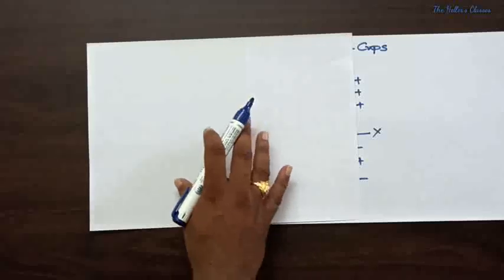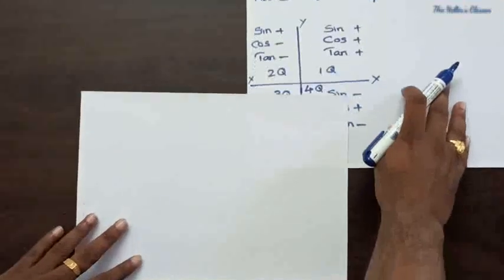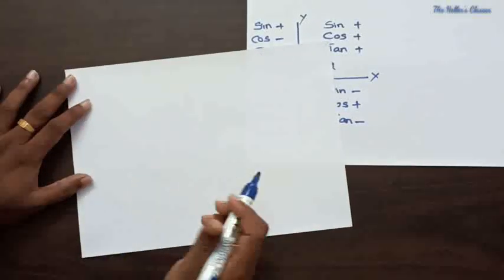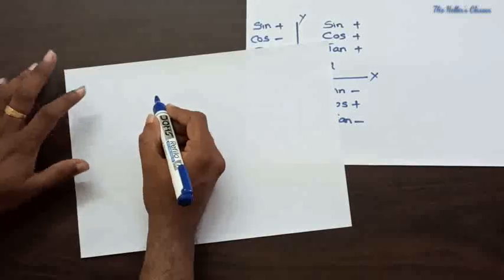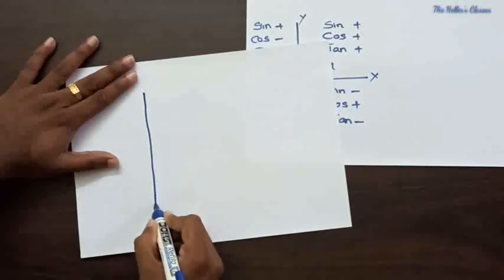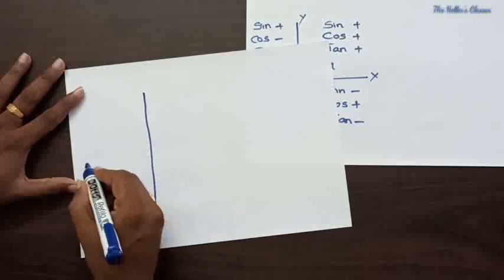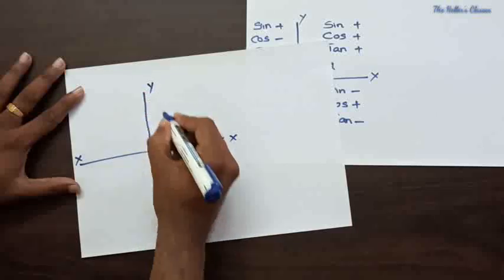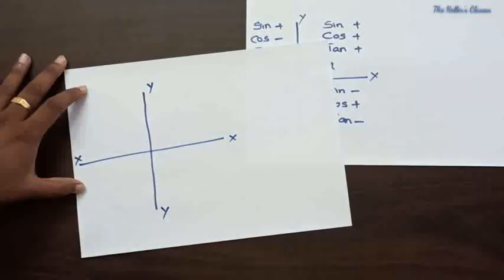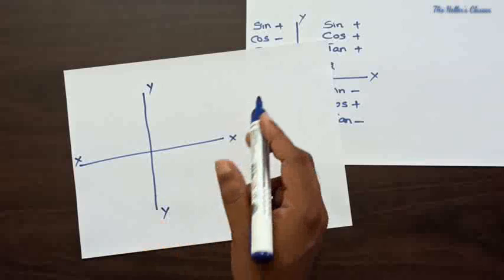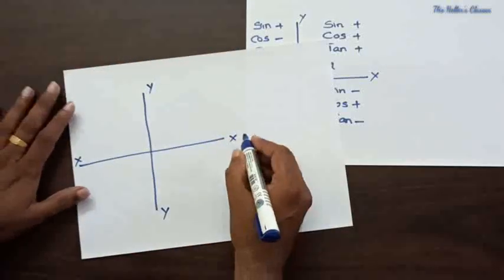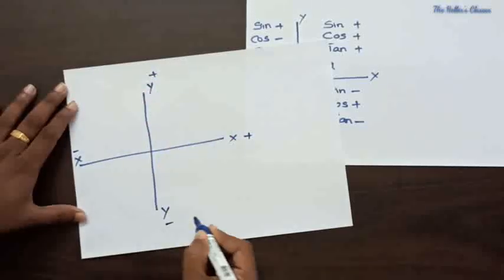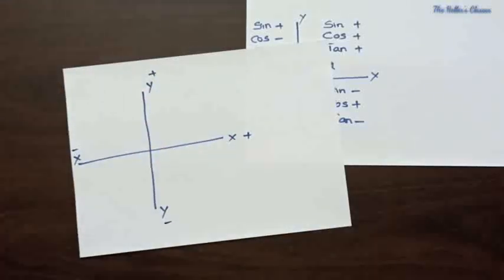I would like to draw the X-Y axis for the explanation. Here I am taking the axis in vertical and horizontal directions — the horizontal direction is X-X and the vertical direction is Y-Y. We know that the right side of X is positive and the left side is negative, and the top of Y is positive and the bottom of Y is negative.